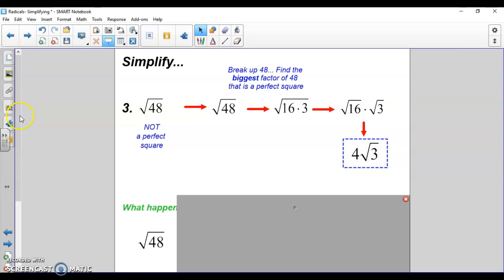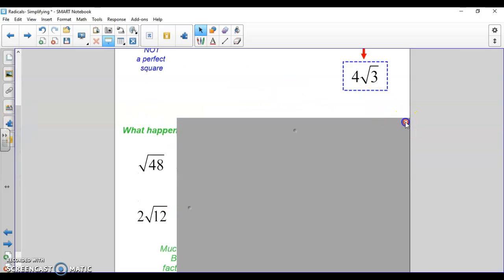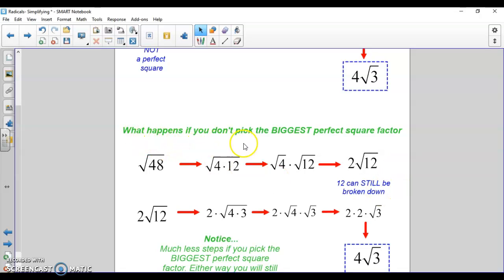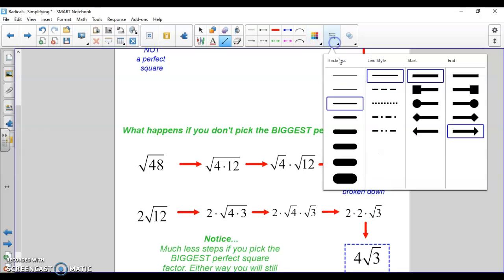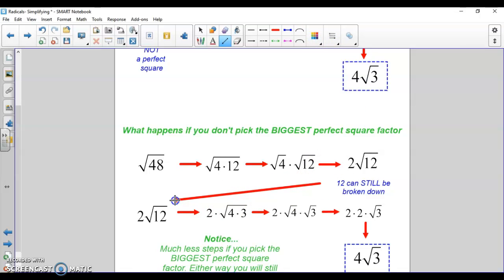Now this is a weird one - longer process, same answer. What happens if you don't pick the biggest perfect square factor? Say you pick 4. We split it up: 4 and 12. Get 2 radical 12. 12 can still be broken down: 4 times 3. Then we have 2 times square root of 4 times square root of 3. Square root of 4 is 2. 2 times 2 is 4. 4 radical 3 - same answer, more work.